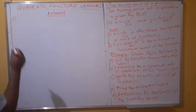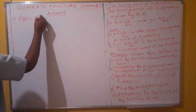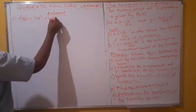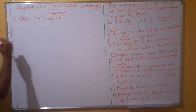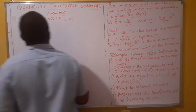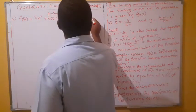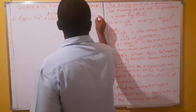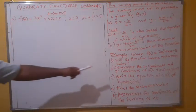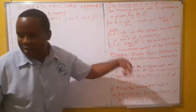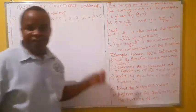Let's look at the worked example. We have the function f(x) = 2x² + 4x + 5. First, we identify the constants: a = 2, b = 4, and c = 5. The question asks whether the function will have a maximum or minimum value.